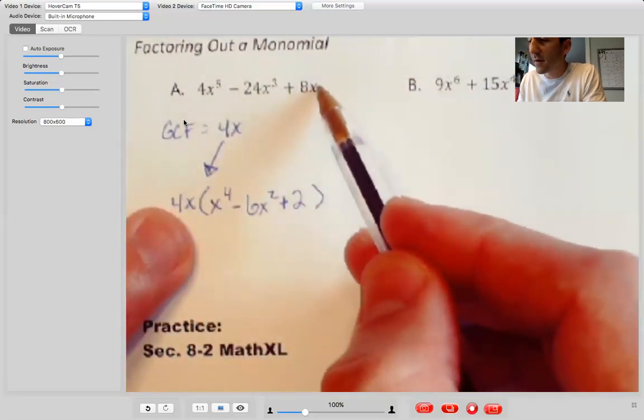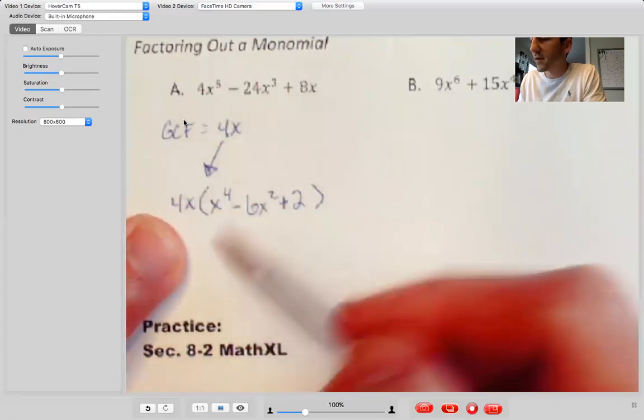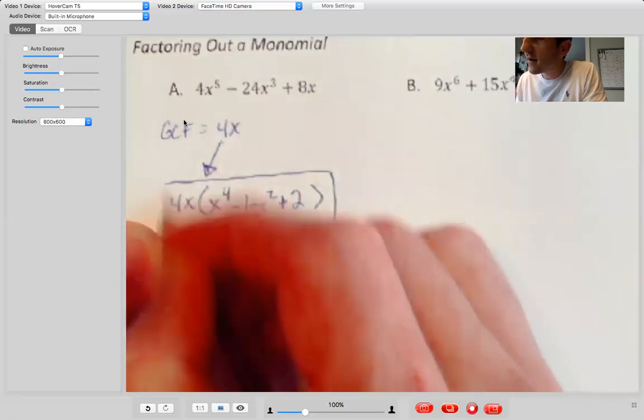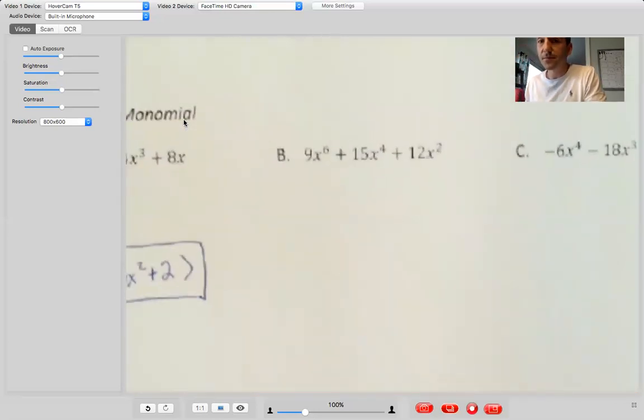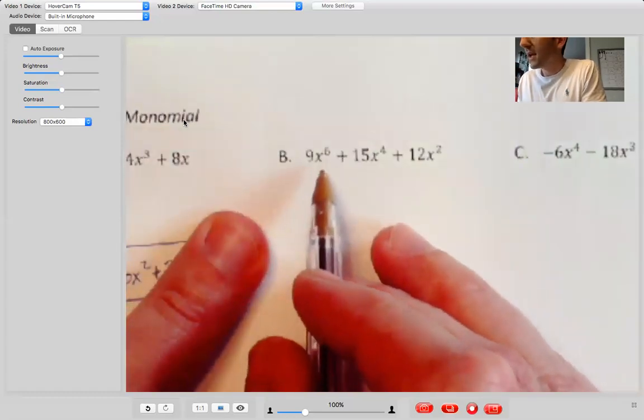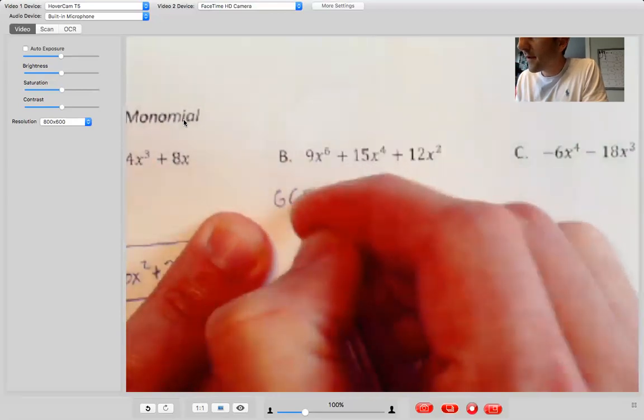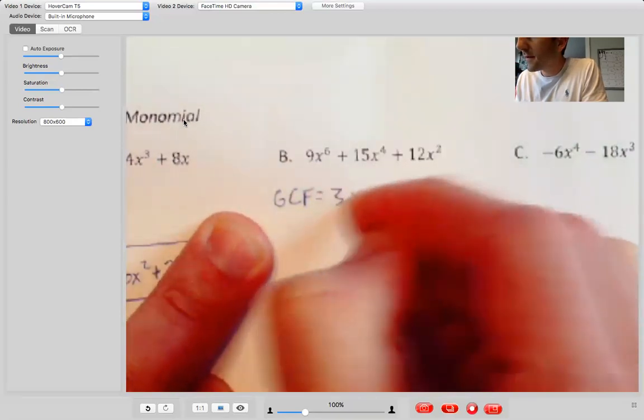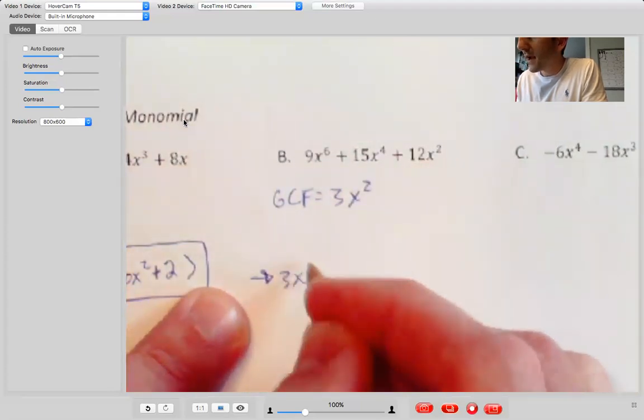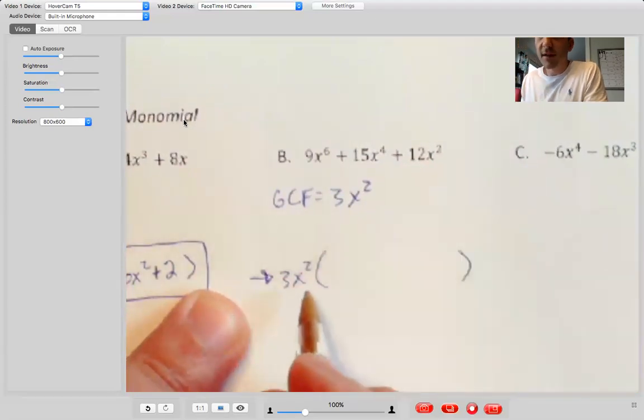And then eight X over four X, eight over four is two X over X is one. So two times one is two. My last term is just two. Or in terms of exponent properties, we can think one minus one is zero. So X to the zero is just one. All right. So that would be my final answer there. Go a little bit quicker on the next two. On the next one, your GCF is going to be, looks like three X squared.